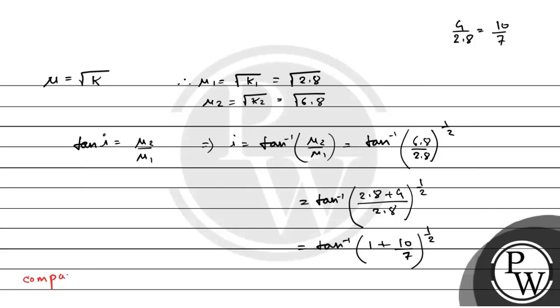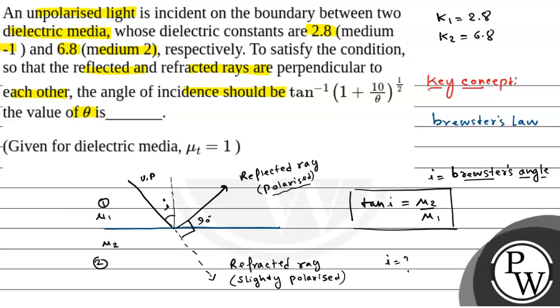Comparing with tan inverse 1 plus 10 by theta to the power half, the value of theta is 7. This is our final answer. That means the value of theta will be 7. Hope you understand it.